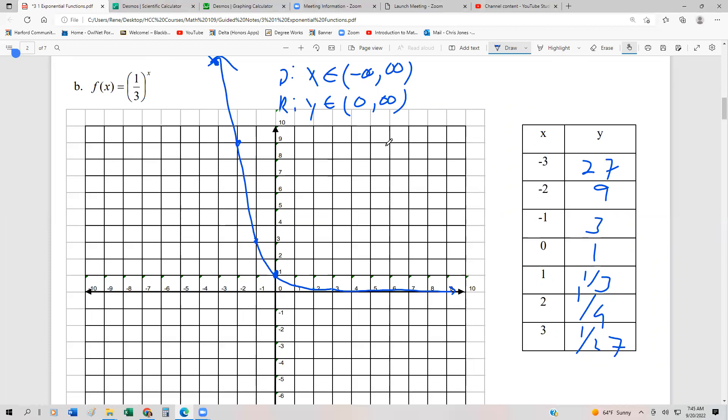And then this time we still have the horizontal asymptote y equals zero, but this time it's as x approaches infinity. Not negative infinity.